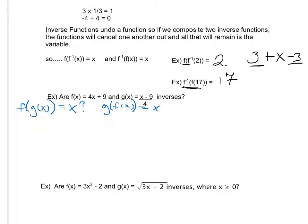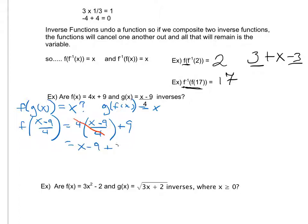Starting with f of g of x, that tells me that I have f of x minus 9 over 4. That means plug x minus 9 over 4 in for f, giving me 4 times x minus 9 over 4, plus 9. Using order of operations, I can cancel out my 4s, leaving me with x minus 9 plus 9. My minus 9 and my plus 9 come together, leaving me with just x. So in response to my initial question, does f of g of x equal x — the answer is yes.